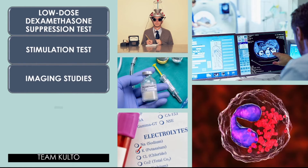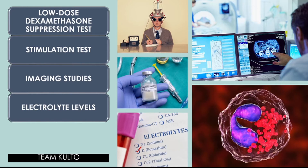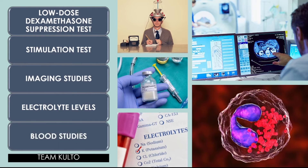Electrolyte levels in a patient with Cushing's syndrome include increased serum sodium and decreased potassium levels. Increased serum sodium manifests as hypertension — because wherever sodium goes, water follows. Blood studies also show indicators of Cushing's syndrome: increased blood glucose levels, a reduction in the number of eosinophils, and disappearance of lymphoid tissue. These are the diagnostic procedures expected when evaluating a patient for Cushing's syndrome.